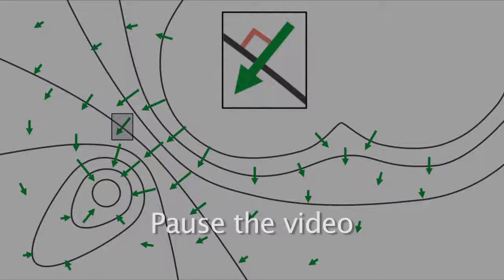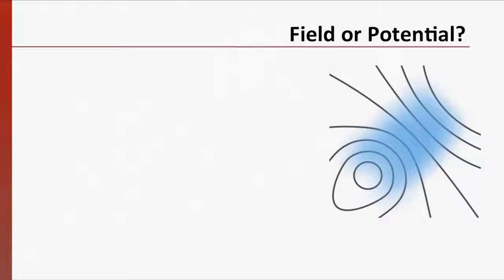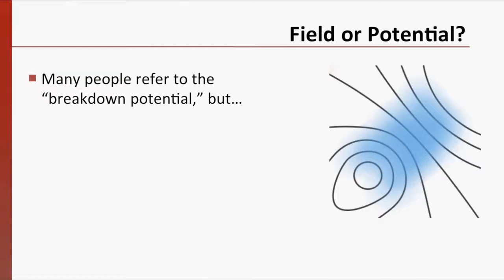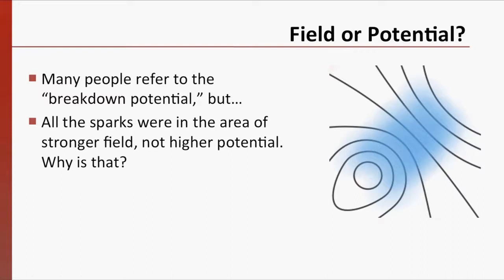Some of you may be confused by the terminology that's used for this phenomenon. Many people refer to the breakdown potential required to create a spark. However, you may have noticed that the sparks in the video were produced where the electric field was the strongest, not where the electric potential was the highest. Turn to a friend and discuss why this is the case. Pause the video here to discuss.